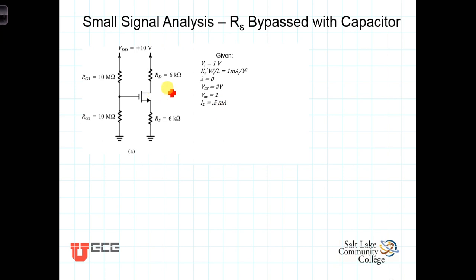We now want to take this circuit and connect a load to it, R_L. In this first example, we'll bypass the source resistance. With that in place, let's look at the small signal model and perform small signal analysis on this circuit to determine the overall gain.